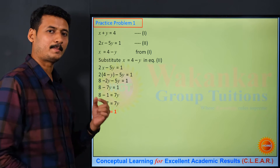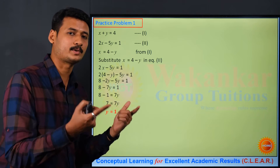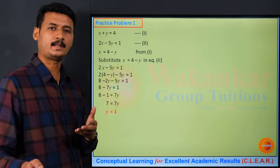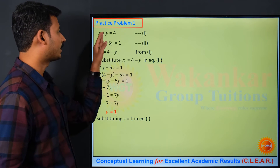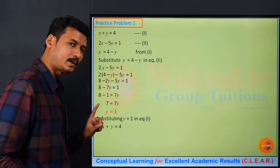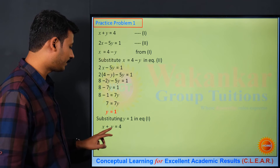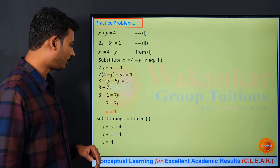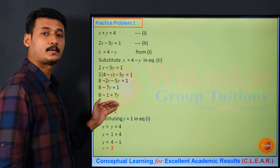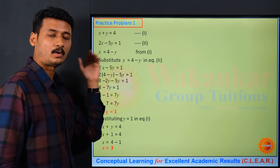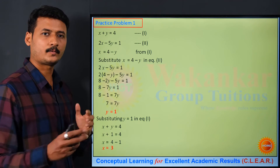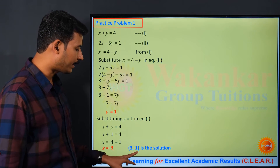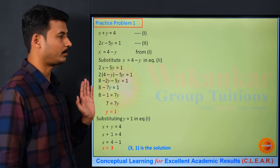Transposing to solve: 7y equals 8 minus 1 which is 7, so y equals 7 upon 7 which equals 1. We got y equals 1. Now substituting y equals 1 into equation number 1: x plus 1 equals 4, so x equals 4 minus 1 which is 3. We got x equals 3 and y equals 1. The solution is written as (x, y) = (3, 1).